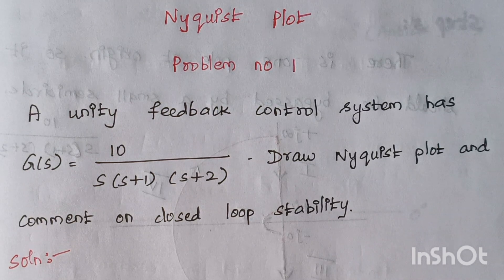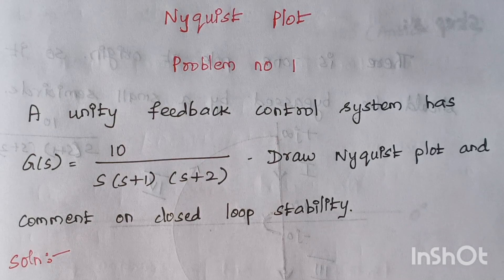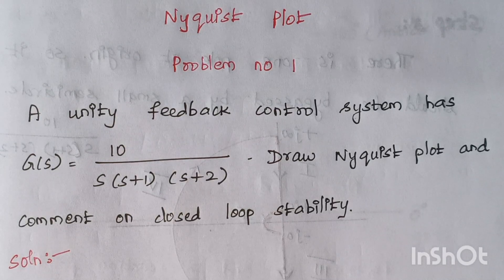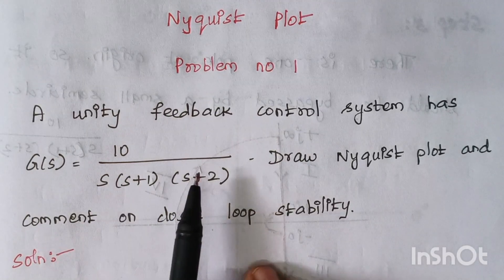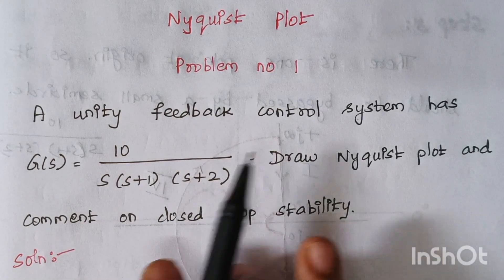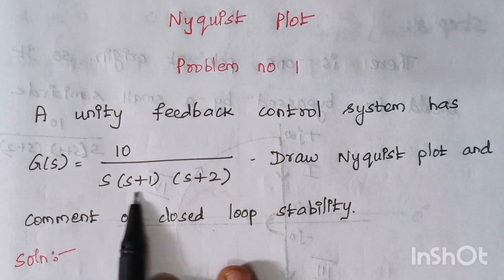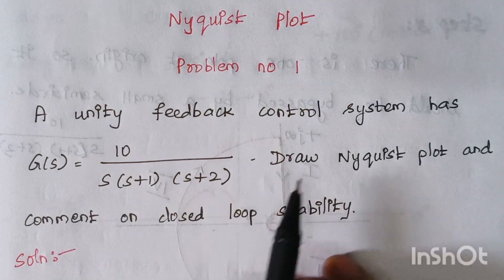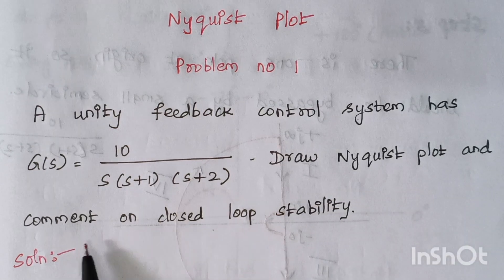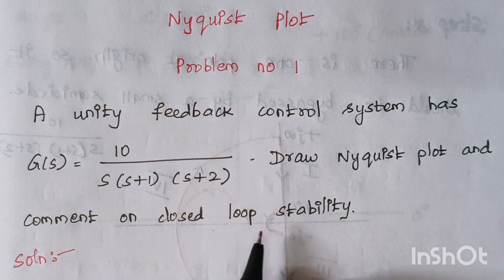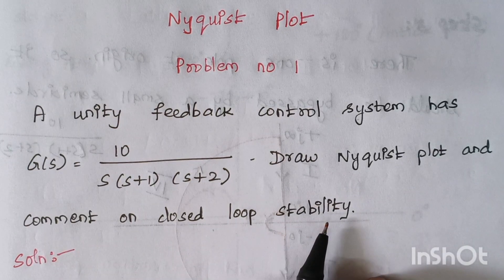Hello viewers, I am Kausalya. Today we are going to solve problem number one under the topic Nyquist plot. The problem is: a unity feedback control system has this given transfer function. Draw the Nyquist plot and comment on the closed loop stability.